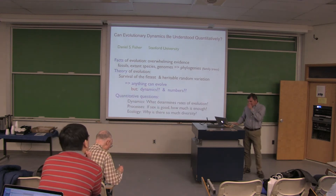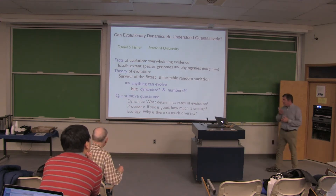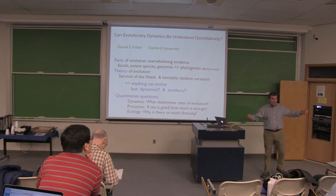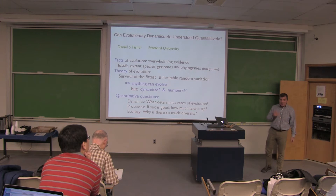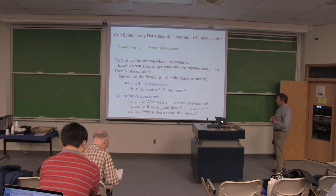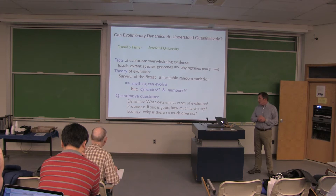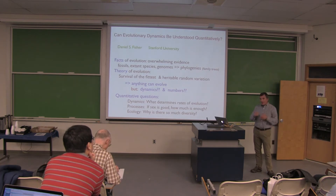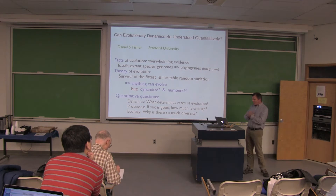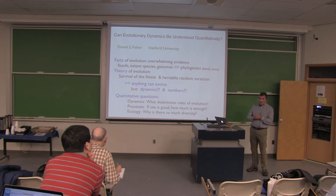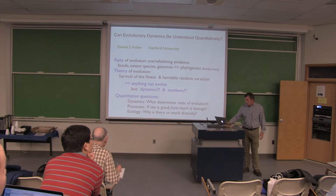The quantitative questions we like to ask: what determines the rates of evolution? We're interested in the origin of life, but even on much narrower and shorter timescales — something about some of the important processes, particularly the role of sex, or more generally recombination. And one question I won't get to but is one of my mainstays: why is there so much diversity on all scales?